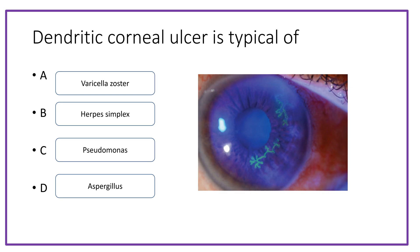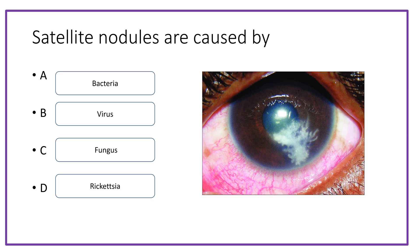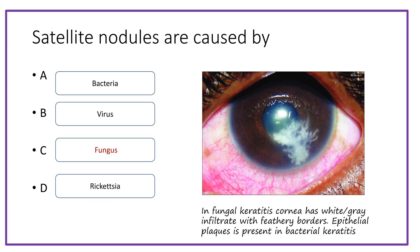Dendritic corneal ulcer is typical of option A: varicella zoster; option B: herpes simplex; option C: Pseudomonas; option D: Aspergillus. The answer is herpes simplex. Satellite nodules are caused by option A: bacteria; option B: virus; option C: fungus; option D: Rickettsia. The answer is option C, fungus. In fungal keratitis, the cornea presents with a white-gray infiltrate with feathery borders, whereas in bacterial keratitis there is an epithelial plaque. This is a discriminating feature between both types of keratitis.